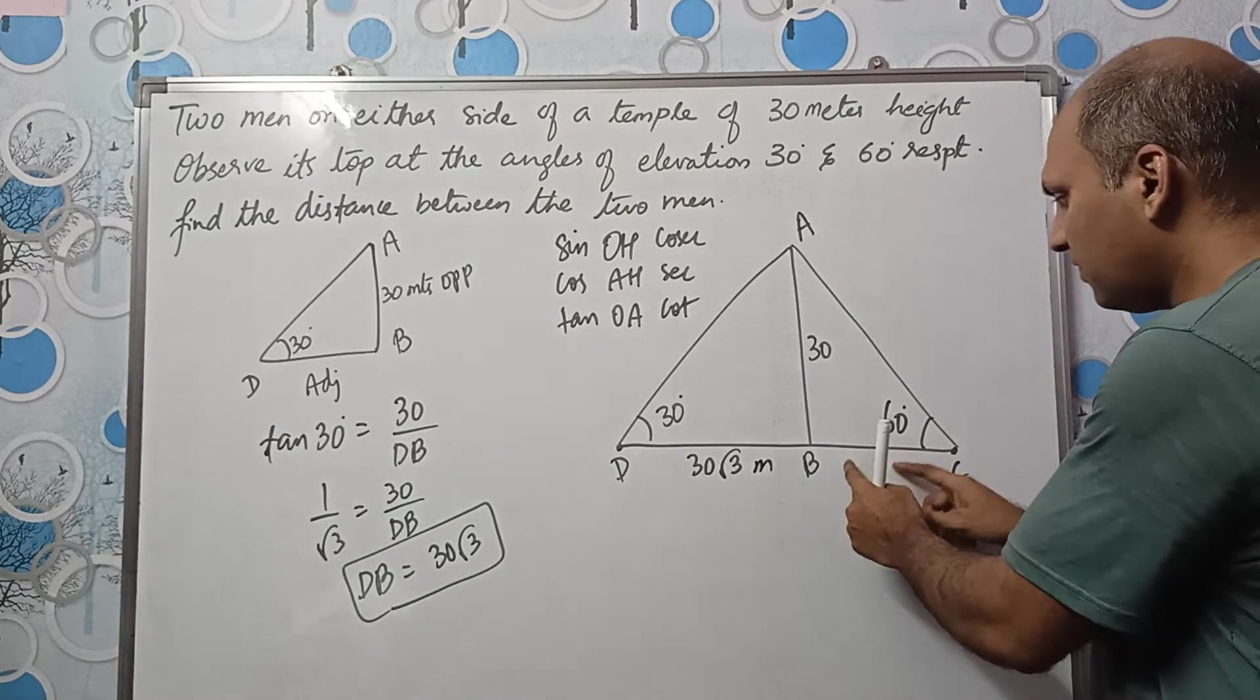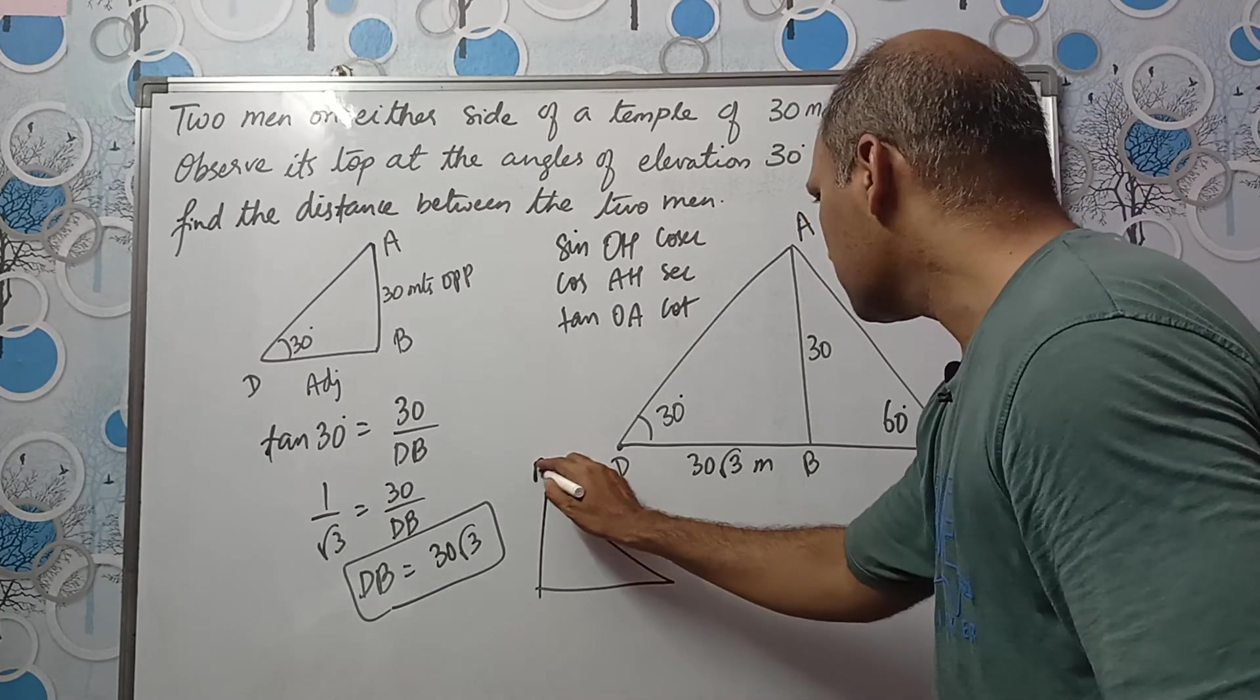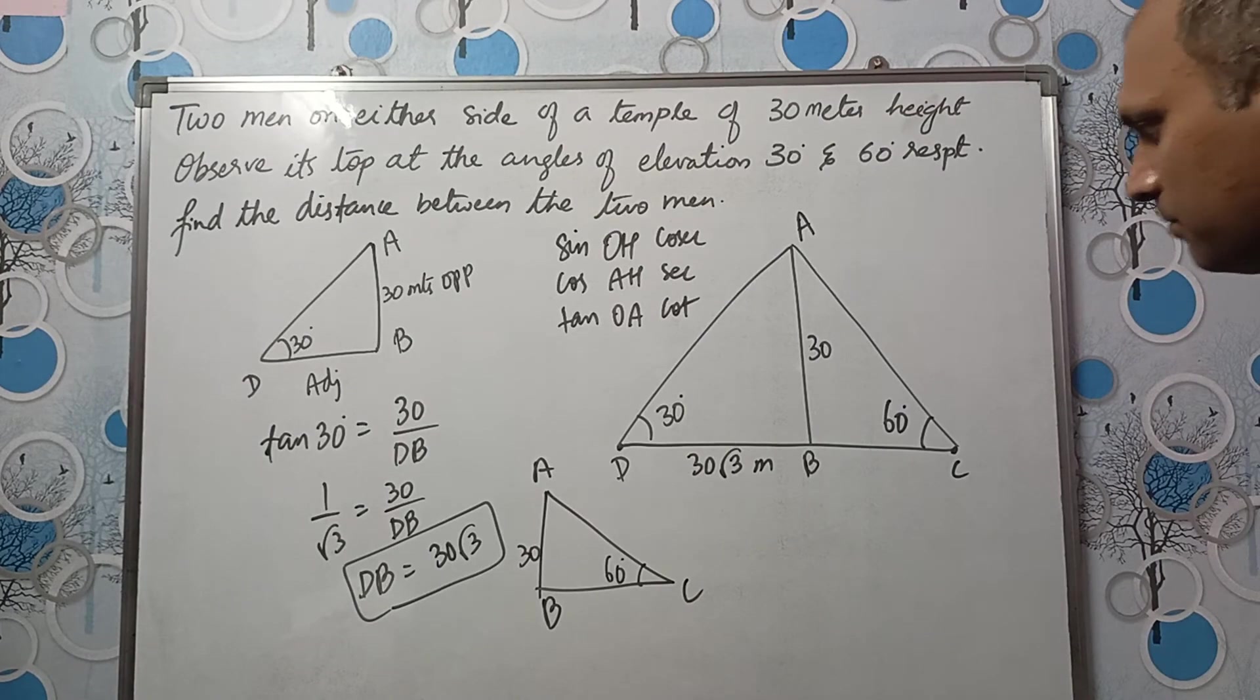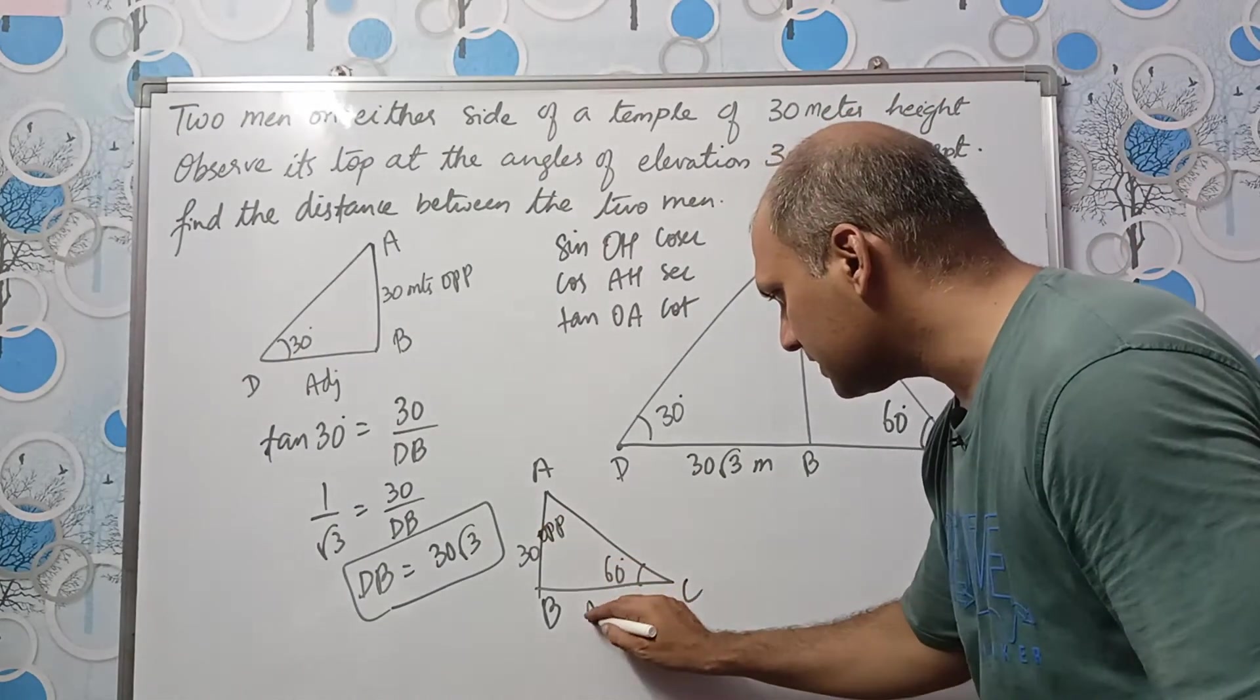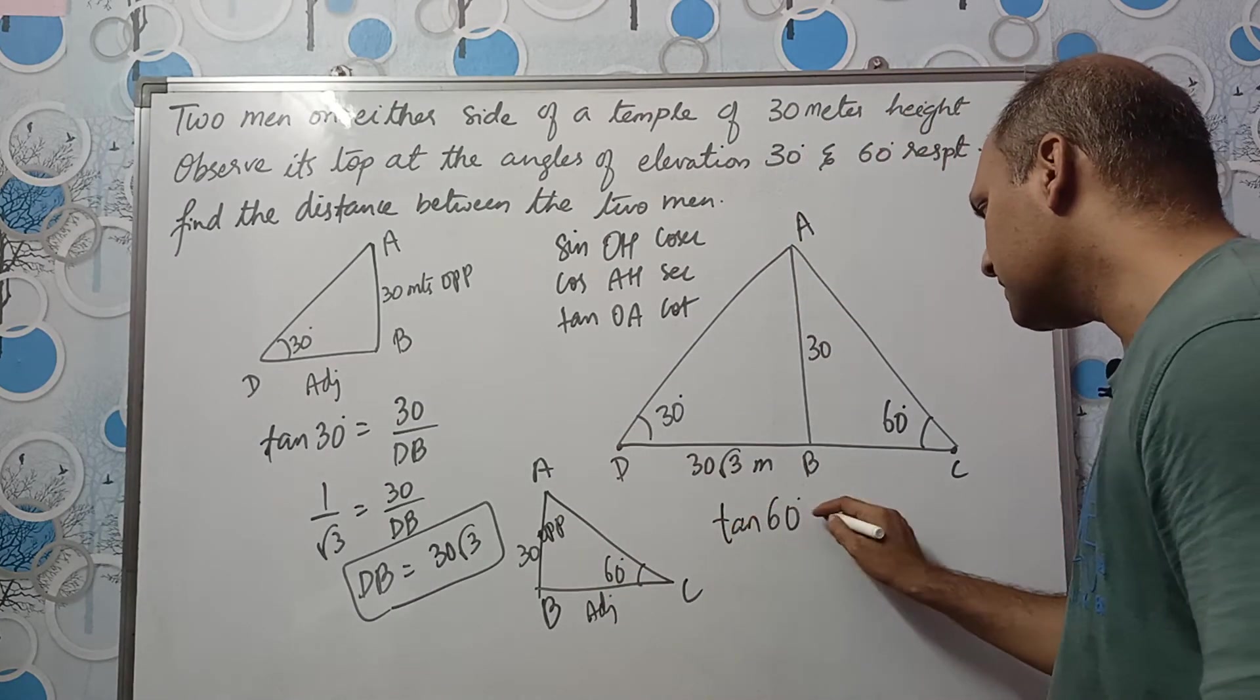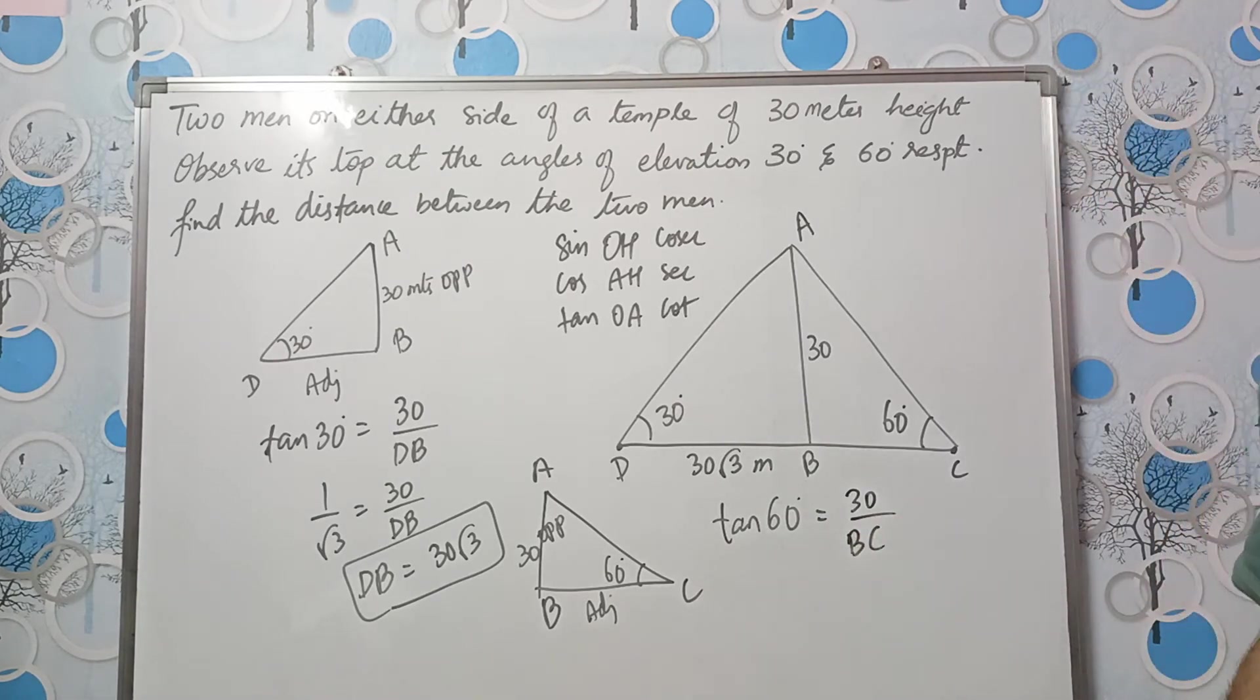Now let us take this triangle and find the value of BC. So let me draw the triangle here. This is ABC and this is 60 degrees and height of the temple is 30 meters. Again, angle is here that means this is the opposite side and this is the adjacent side. Opposite adjacent is in tan. So we have tan 60 degrees is equal to opposite divided by adjacent. Opposite is 30 divided by adjacent, let it be BC.